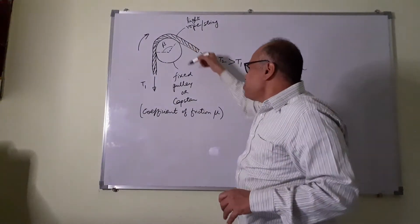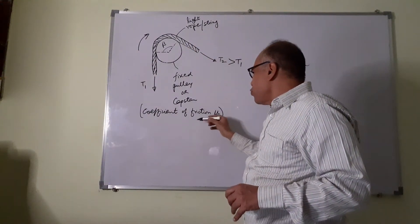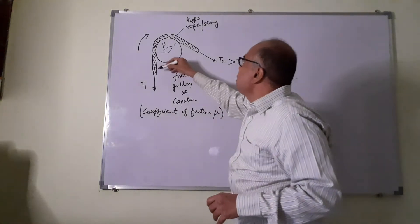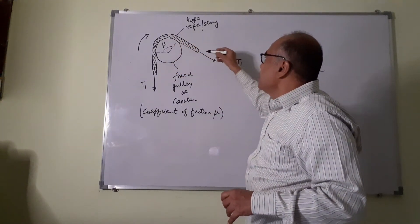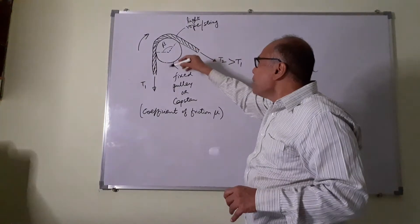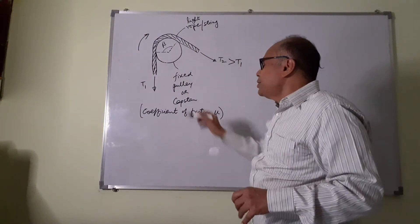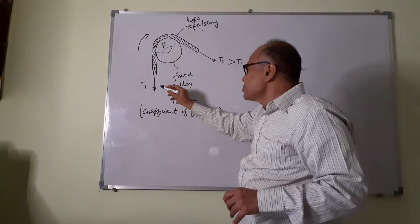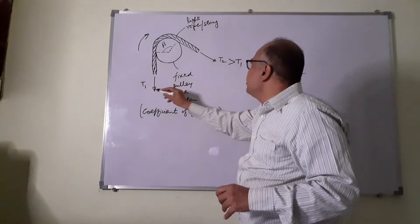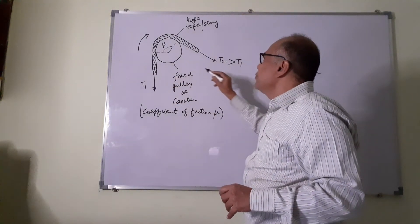So you have a fixed pulley or a capstan, it is rough, the coefficient of friction is mu. There is a light rope or string passing over the pulley. The tension on the two sides are T1 and T2, where T2 is greater than T1.